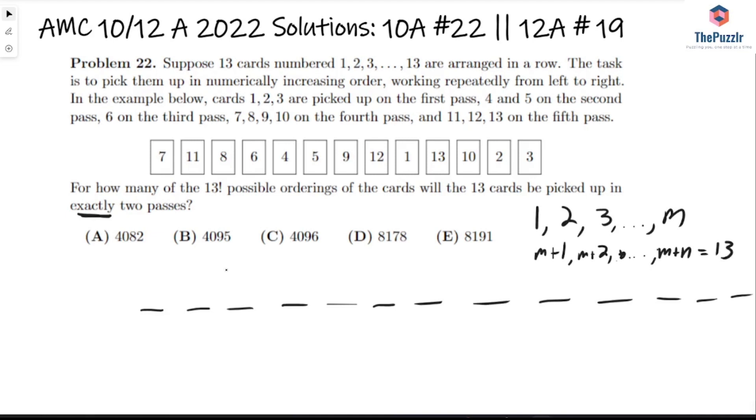So how many ways can I arrange the cards so that I'm picking M cards on the first pass and the remaining cards on the second pass? Let's try an example. What if we pick M equals 2? So now we have to arrange 1 and 2 out of these 13 cards. Well, can we pick any two spots? Well, yeah, we can. So let's say we pick two spots. That's 13 choose 2.